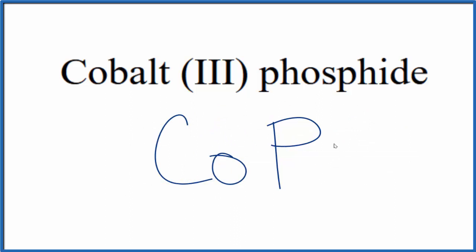If you were given the formula and asked to write the name, you know that phosphorus forms the phosphide ion, that's 3-. That means the cobalt would have to be 3+, so you'd write the Roman numeral 3 in parentheses between the names.